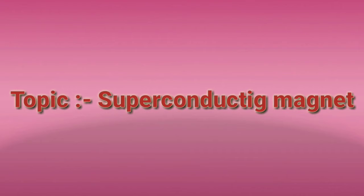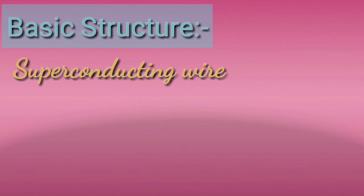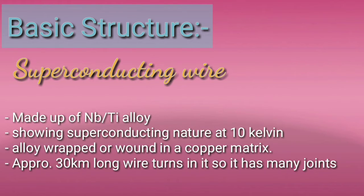Let's begin with the basic structure. First, we look at the superconducting wire. It is made up of a niobium and titanium alloy. It shows superconducting nature at 10 Kelvin temperature, and the wire is also wrapped by a copper matrix. Approximately 30 kilometers of wire is used in an MRI machine.